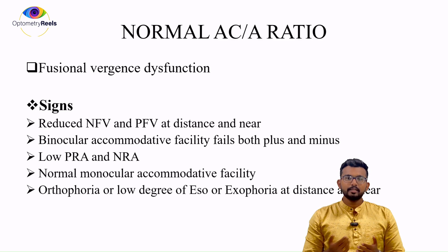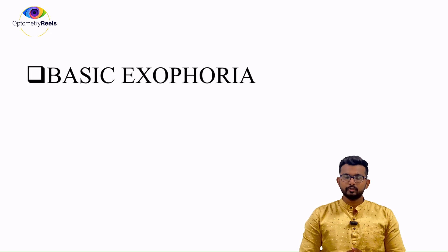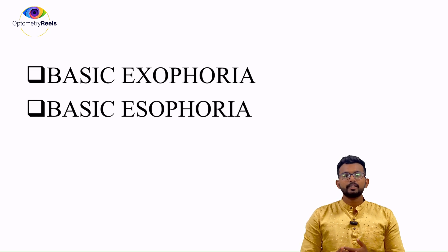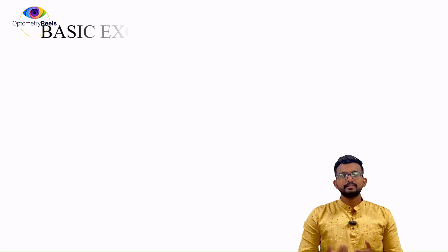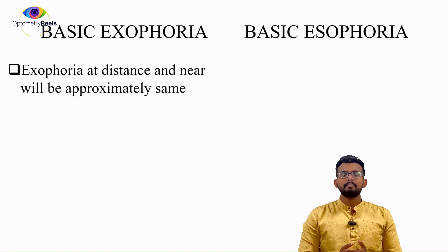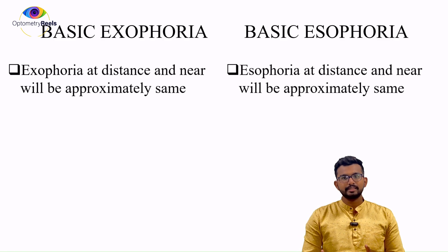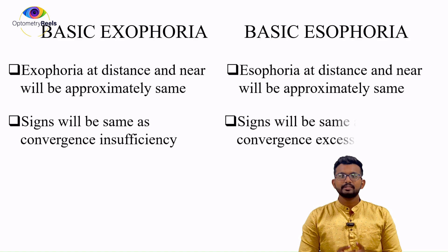Talking about the phoria status: the patient will be having either orthophoria or low exophoria or esophoria for distance and near. The next conditions are basic exophoria and basic esophoria, where we are talking about equal phoria status for distance and near — that is what is meant by 'basic.' For basic exophoria, the amount of deviation for distance as well as near will be approximately the same. For basic esophoria, similarly the deviation for distance and near will be the same. The signs of both basic exophoria and esophoria will be the same as patients having convergence insufficiency and convergence excess.